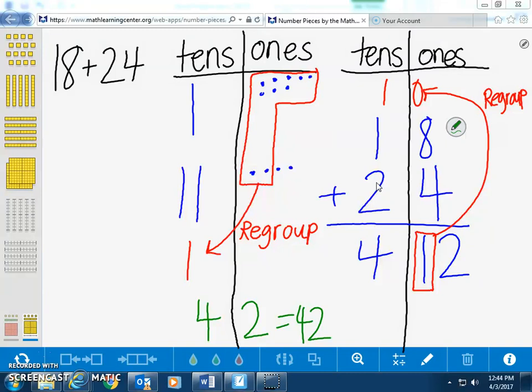Now, we have 4 10s and 2 1s, which is equal to 42, our answer.